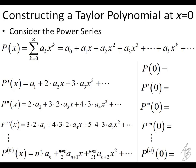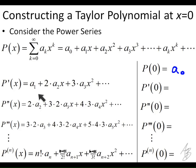Since we want the behavior of our power series to be like the behavior of our function f at x = 0, we're going to plug 0 into the power series itself, then into the derivative, second derivative, third derivative, and so on. When we put 0 in, all of the terms with an x in them disappear. Plugging 0 into the derivative, those x terms disappear leaving just a₁. Plugging 0 into the second derivative leaves just the constant term, which is 2a₂.